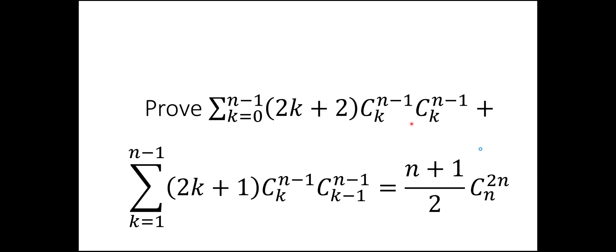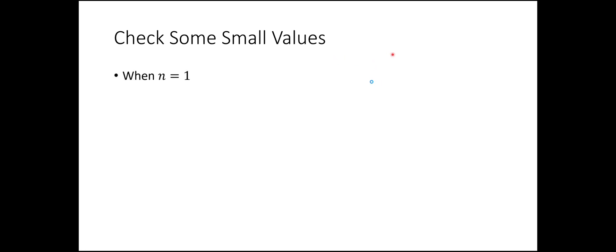So here's my idea. First, let's check some small values. When n equals 1, the summation has k going from 0 to n-1, which is 0. So there's just one term. Plugging in k=0: 2k+2 equals 2, and C(n-1, k) = C(0, 0) = 1, so the first term gives 2 times 1 times 1, which is 2.